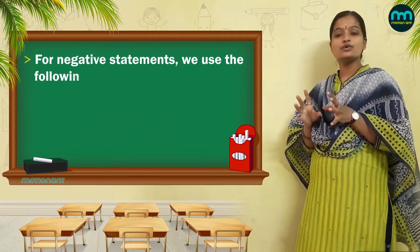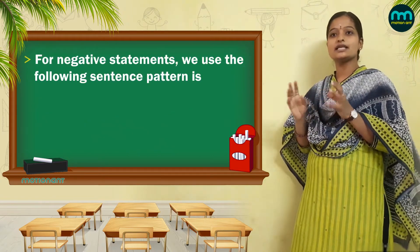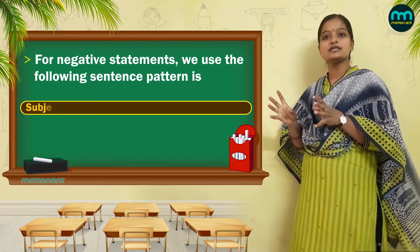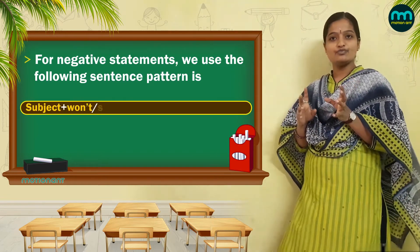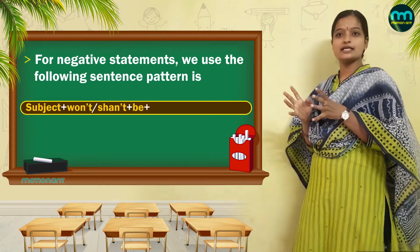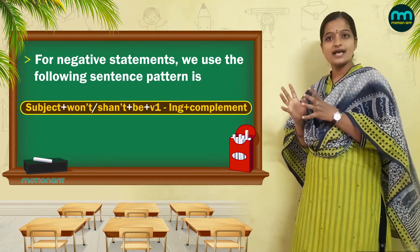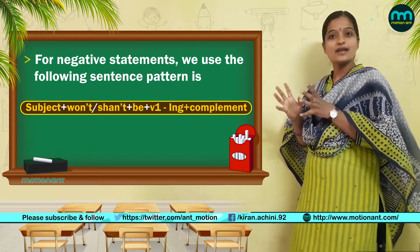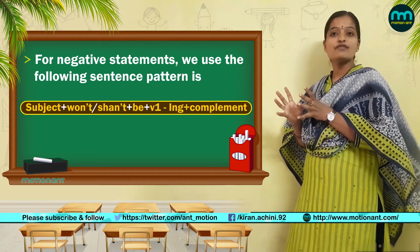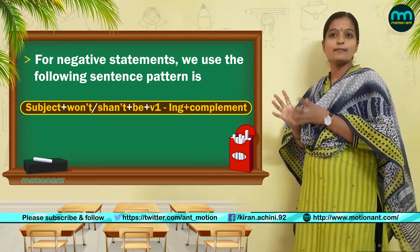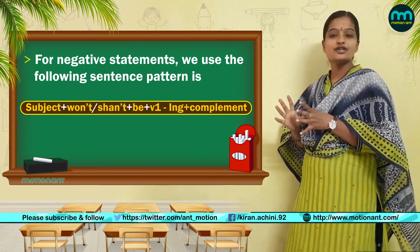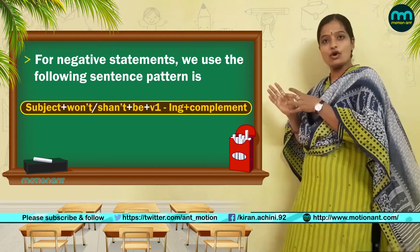For negative statements, we use 'not' in the sentence. The sentence pattern is: Subject plus won't or shall not plus be plus the V1 form of the verb by adding -ing plus complement.